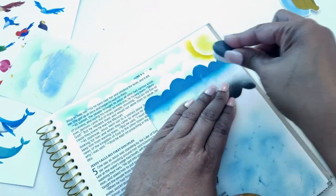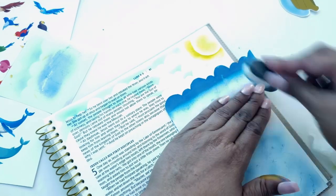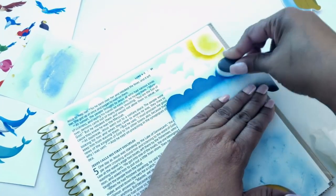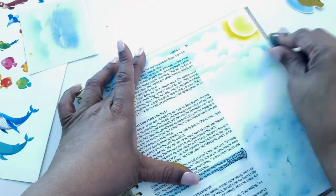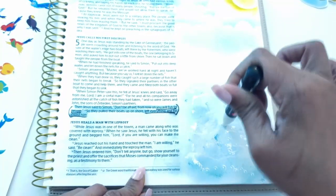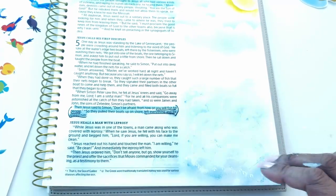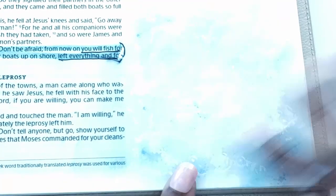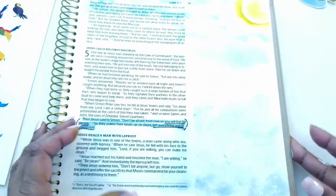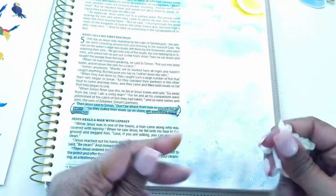It says, one day as Jesus was standing by the Lake of Gennesaret, the people were crowding around him and listening to the word of God. He saw at the water's edge two boats left there by the fishermen who were washing their nets. He got into one of the boats, the one belonging to Simon, and asked him to put out a little from the shore. Then he sat down and taught the people from the boat. When he had finished speaking, he said to Simon, put out into deep water and let down the nets for a catch. Simon answered, Master, we've worked hard all night and haven't caught anything, but because you say so, I will let down the nets.